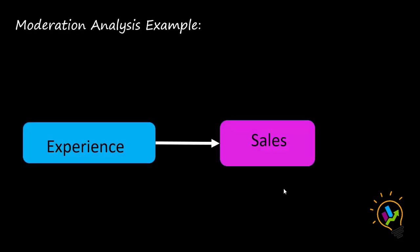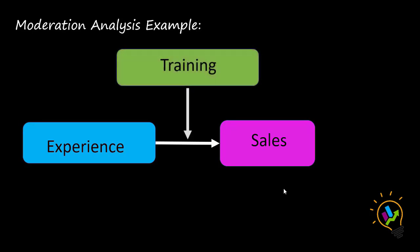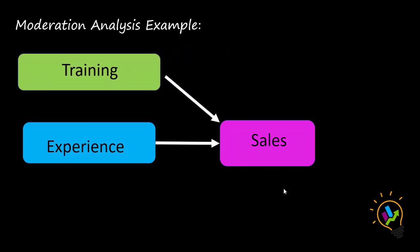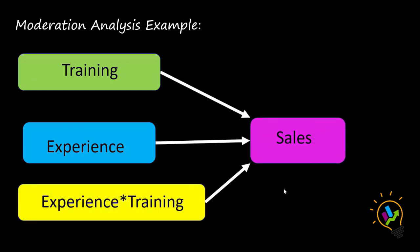In this example we want to find the impact of experience on sales. Training is taken as the moderation variable. We want to find whether, in the presence of training, experience is going to impact sales. When we do this moderation analysis we have to find the impact of training on sales, experience on sales, and the third important variable: the interaction of experience and training on sales. So in moderation analysis we find the impact of three variables: training, experience, and the training-experience interaction.